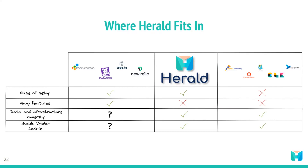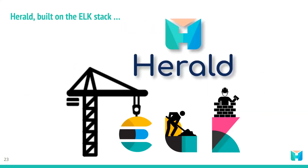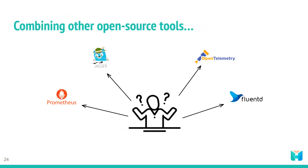What is needed is a solution comprised of a set of battle-tested observability tools. Herald is built on the ELK stack, comprised of Elasticsearch, Logstash, and Kibana — a popular set of open source tools commonly used for log management and analysis. The full ELK ecosystem also offers tools for trace and metric data, and the combination of these tools provides a complete observability solution.